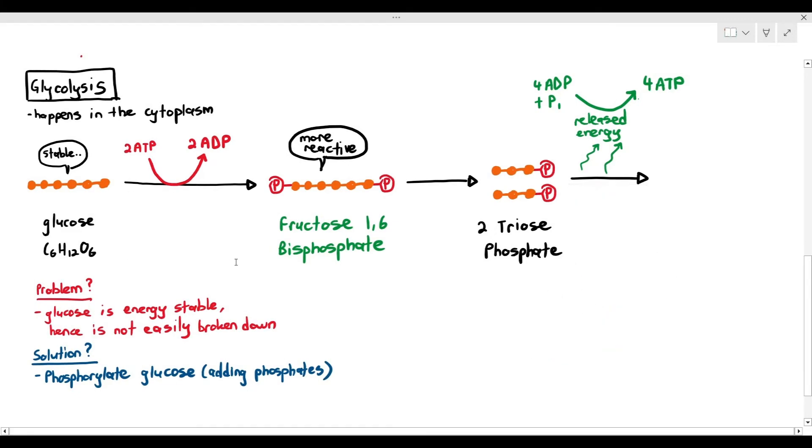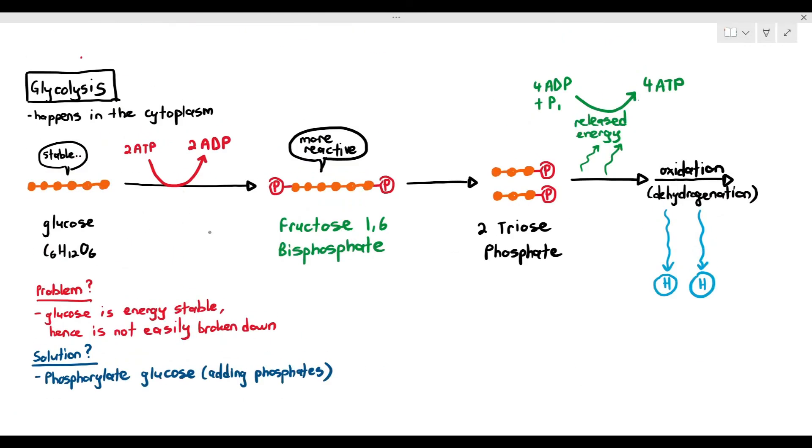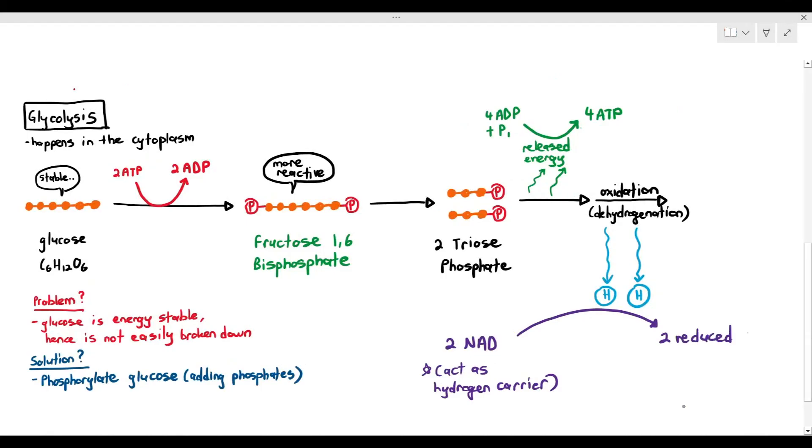The molecule also undergoes oxidation. Oxidation, in this case, means dehydrogenation. What is dehydrogenation? It releases hydrogen atoms. In the previous video, I told you that the hydrogen atom doesn't know where to go. It needs to go into the inner mitochondrial membrane. To transport it to the inner mitochondrial membrane, we enlist the help of NAD, nicotinamide adenine dinucleotide. You don't have to memorize the long name. The NAD acts as the hydrogen carrier, meaning it accepts the hydrogen. When it accepts the hydrogen, it becomes reduced NAD. The reason it becomes reduced NAD is because the NAD has received the hydrogen. The triose phosphates undergo oxidation, but the NAD undergoes reduction.